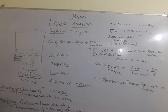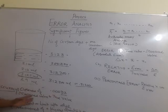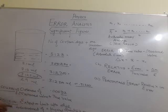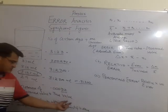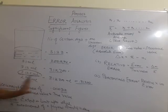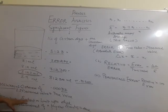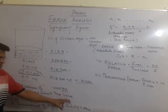We have two important terms: accuracy and precision. Accuracy is defined as the closeness of a measured value to the true value — that is, how close the measured value is to the true value. Precision is the extent to which a measurement of a physical quantity is repeated consistently.